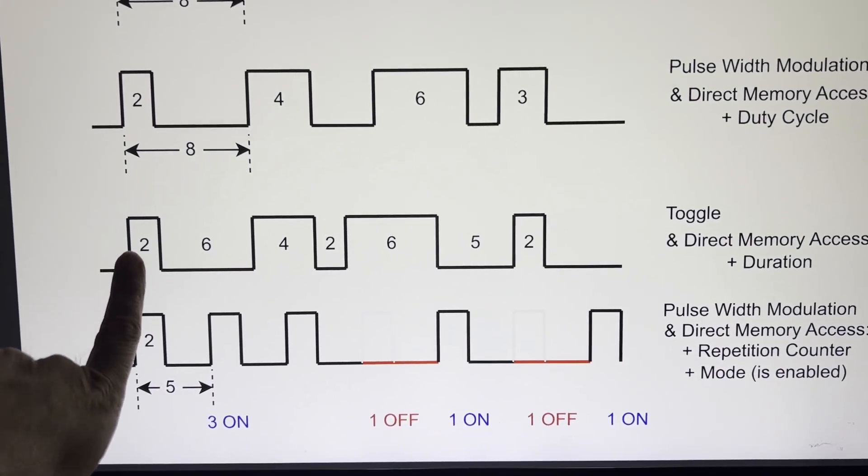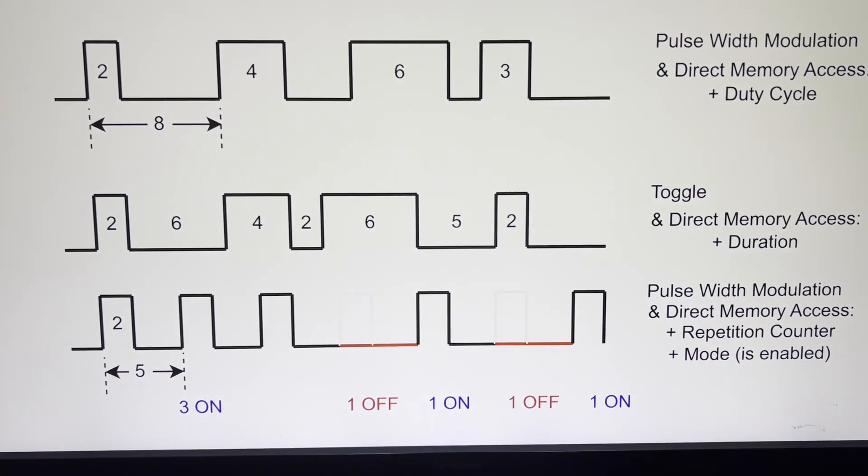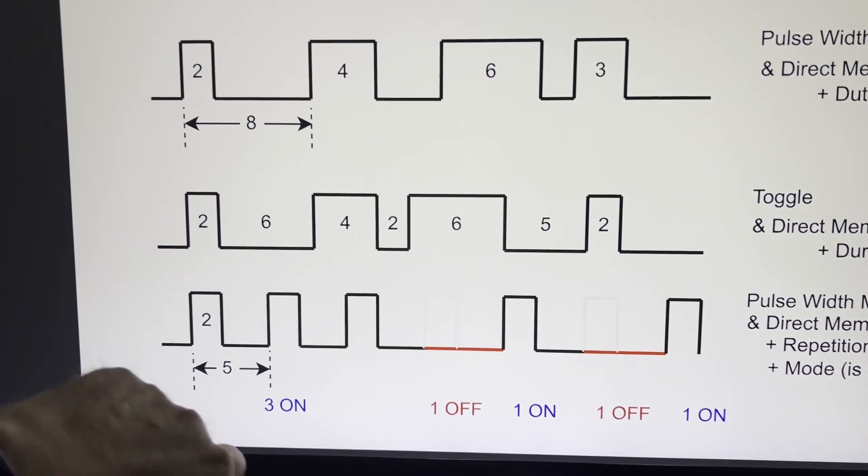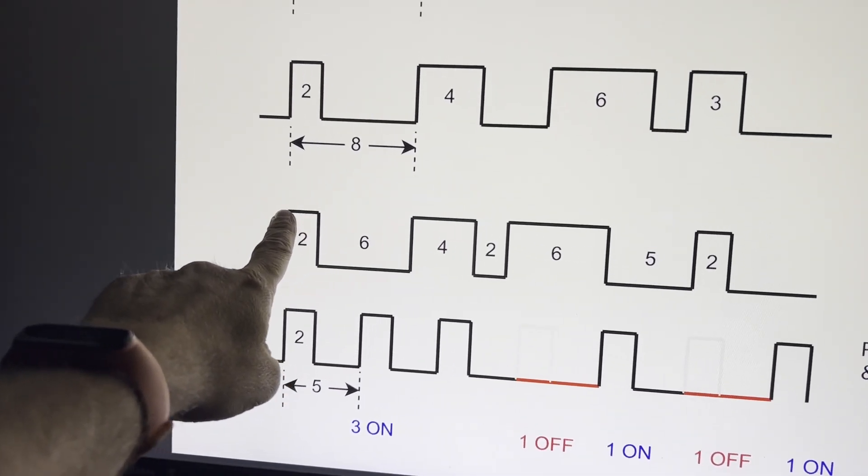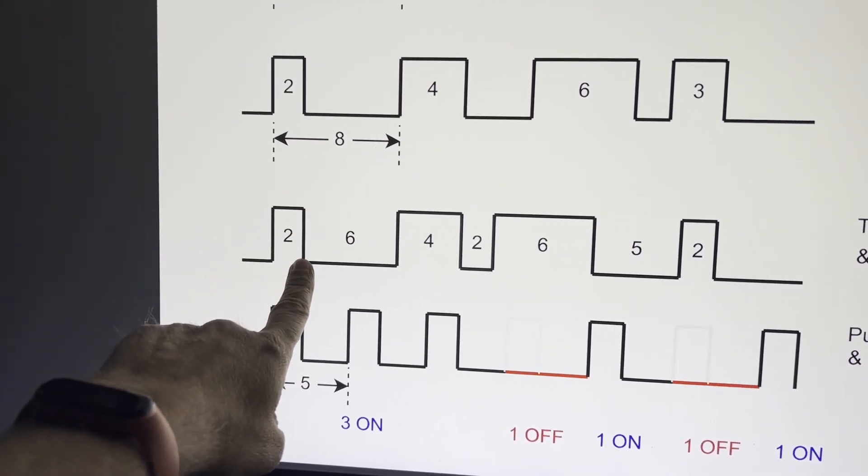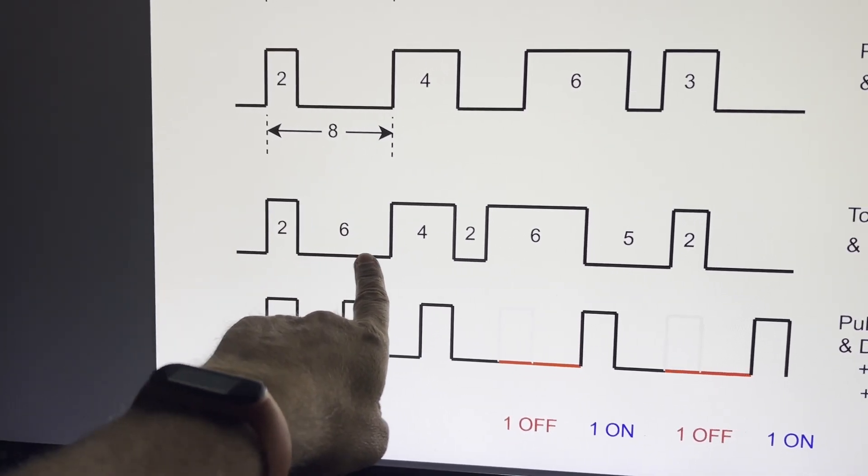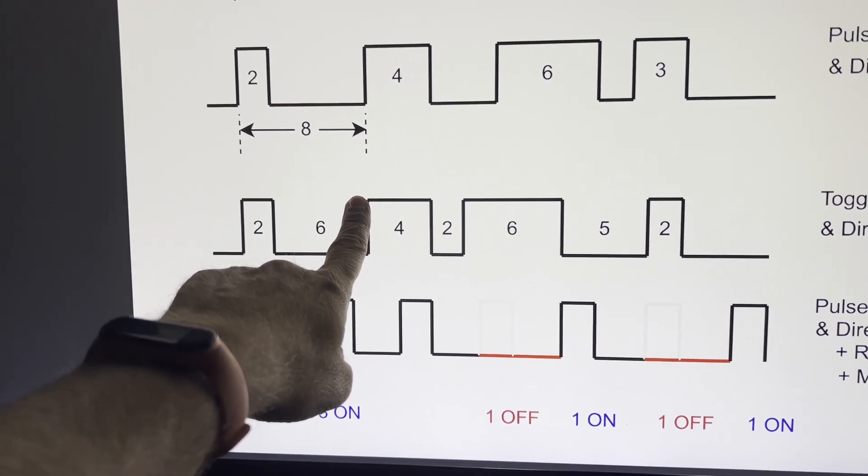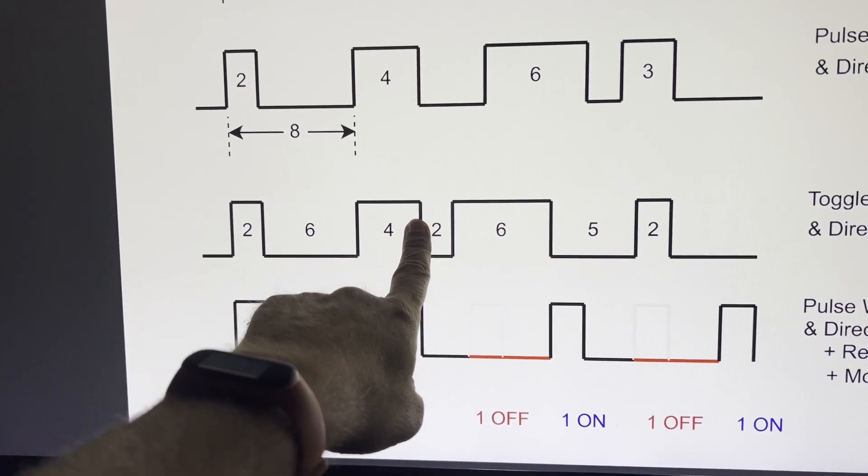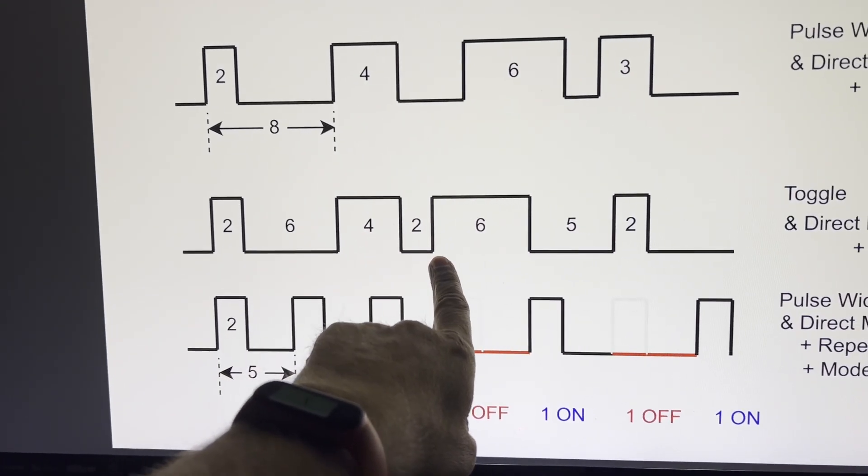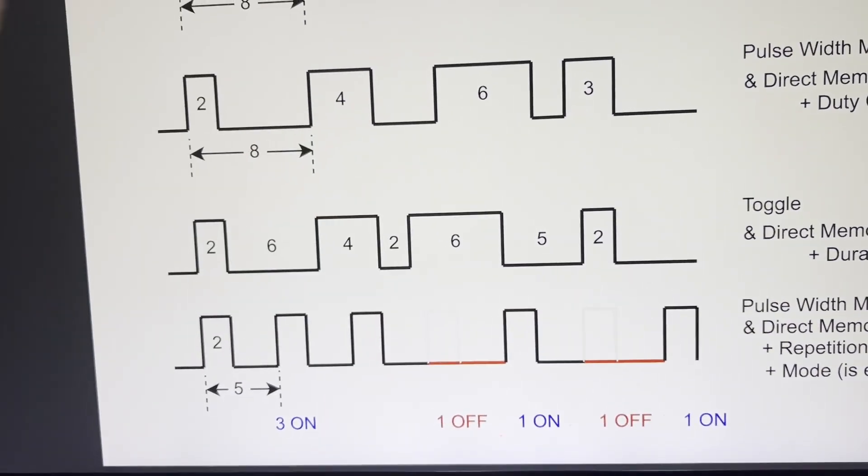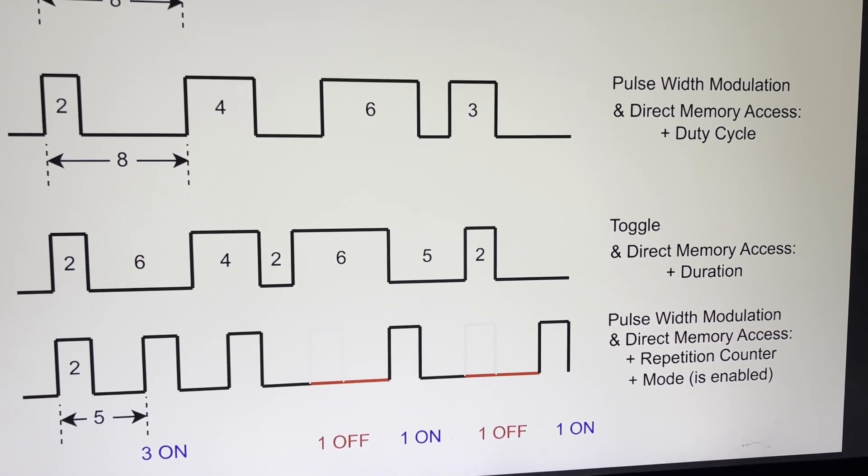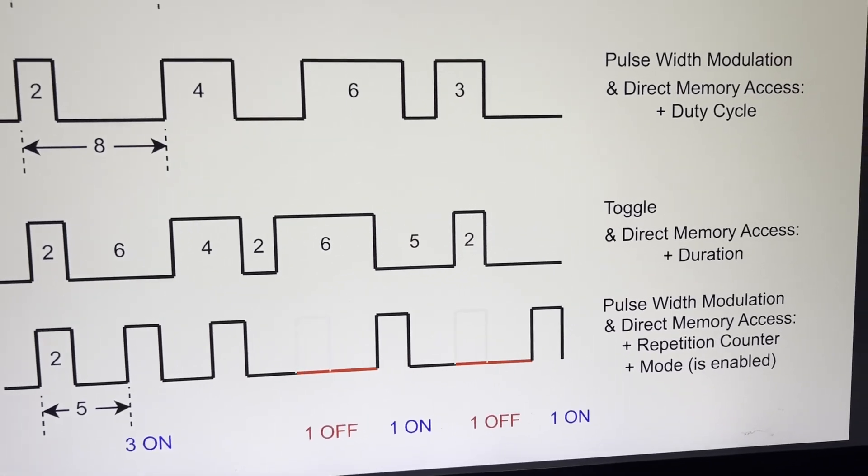Okay, now we have toggle plus direct memory access, and our direct memory access is changing the duration of our toggle. So we're on for two, and then we toggle, and then direct memory access, we change the value to a six. And then we toggle, and then direct memory access, we change the value to a four. And we toggle, and then we change the value to a two, and toggle, and six, five, two. So here, we're able to do an arbitrary waveform using toggle plus direct memory access.